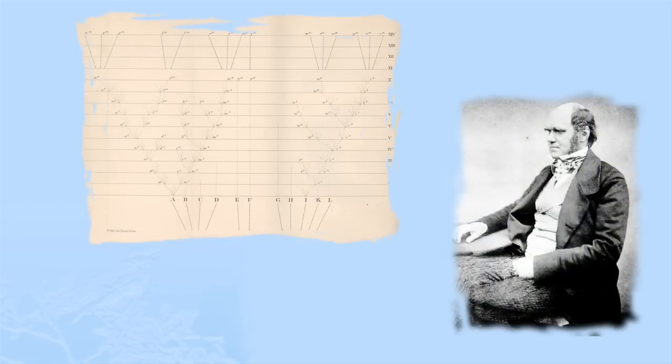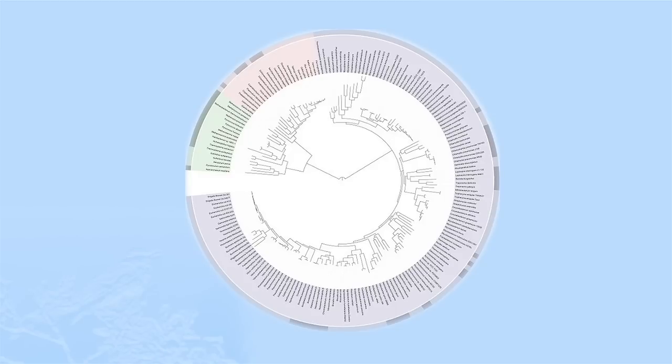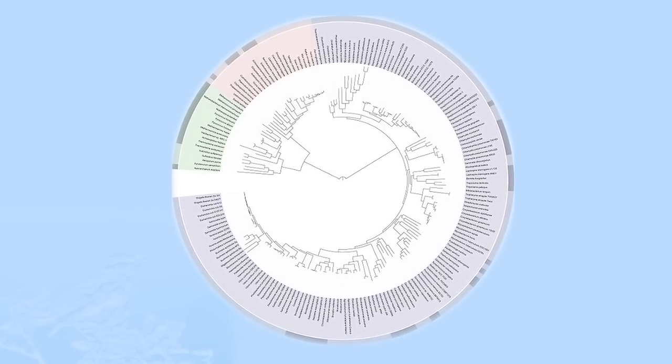We've been studying speciation for a very long time. Why are we still studying it 150 years after Darwin wrote his book on the origin of species? The processes that lead to the origin of new species have been a central question in biology ever since Darwin, and even before. We see in the world so many different species with a great diversity of behaviors, morphology, and ways to exploit the habitat, and we need to understand how those very different approaches to life came about from theoretically the same common ancestor.